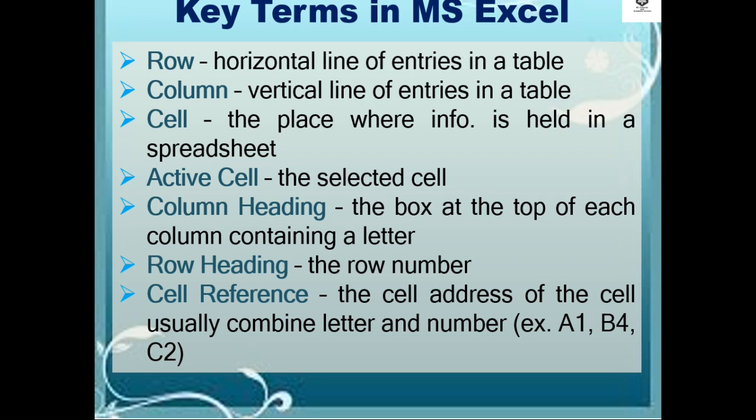Active cell: the selected cell. Column heading: the box at the top of each column containing a letter. Row heading: the row number.